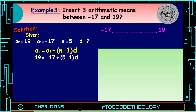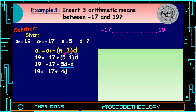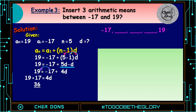By the distributive property of multiplication, we multiply d by quantity 5 minus 1, that is 5d minus d. So 19 is equal to negative 17 plus 5d minus d. Combining like terms, 5d minus d is 4d. So 19 is equal to negative 17 plus 4d. Transpose negative 17 to the other side; it becomes positive. So 19 plus 17 is 36, and 36 is equal to 4d. Divide both sides by 4: 36 divided by 4 equals 9. Therefore d is equal to 9.